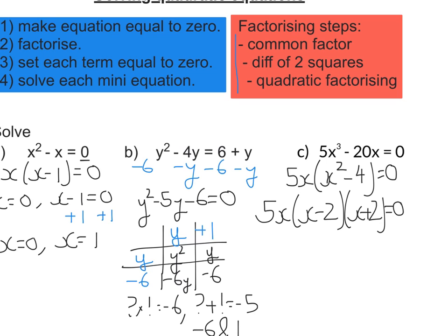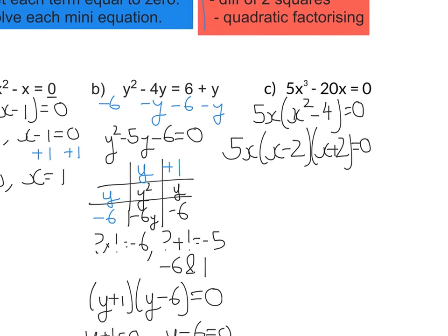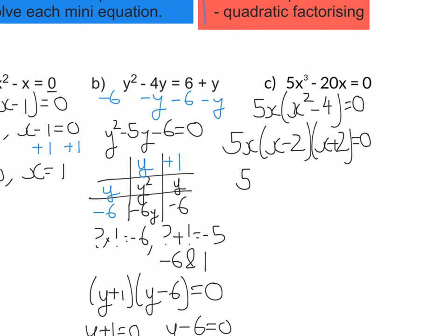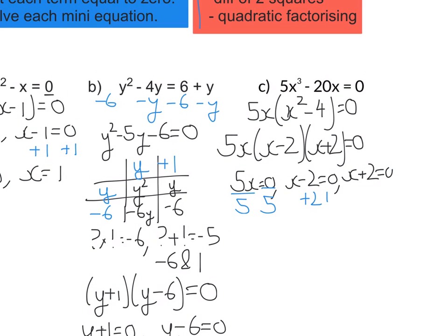Okay, now set each term equal to zero. So we will have 5x = 0, x - 2 = 0, and x + 2 = 0. Let me just make that a bit more of a plus. Solve each mini-equation. Well, so divide by 5 to get x on its own there. Add 2 to both sides to get x on its own. So we're left with x = 0, x = 2, and x = -2.